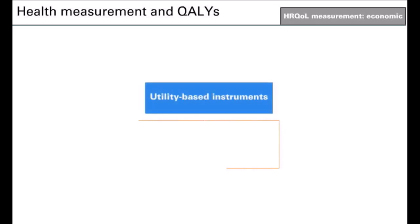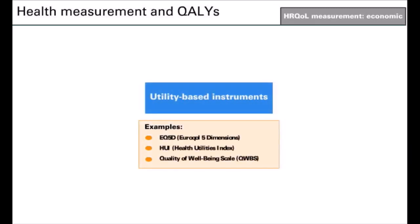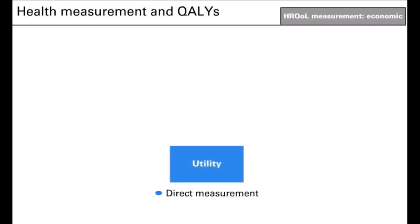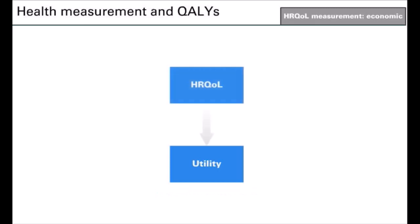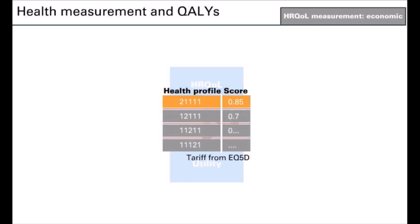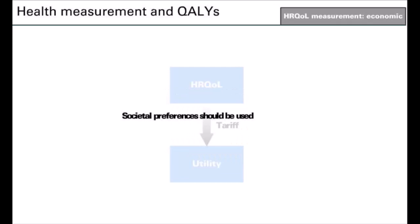Instruments used in clinical trials to estimate utility are known as utility or preference-based instruments. They are most commonly generic. Utility-based instruments either directly measure a patient's preference for a health state — for example using a visual analogue scale — or measure a patient's health-related quality of life and then infer the utility using a predefined tariff. The tariff lists the utility associated with each possible health-related quality of life score, obtained from a previous experiment such as time trade-off, in the general population. It is generally considered that the preferences of society should be used in economic evaluation, so the tariff approach is often preferred.